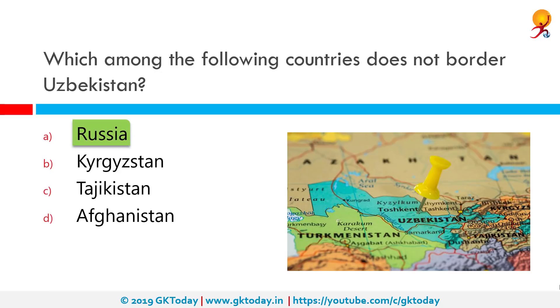Uzbekistan is bordered by five landlocked countries: Kazakhstan to the north, Kyrgyzstan to the northeast, Tajikistan to the southeast, Afghanistan to the south, and Turkmenistan to the southwest.